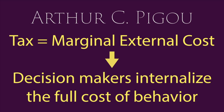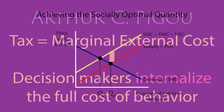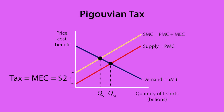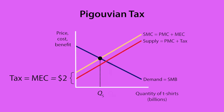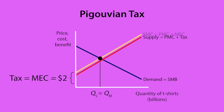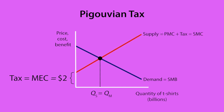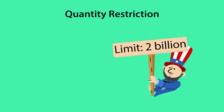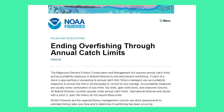Arthur Pigou pointed out that a tax equal to the marginal external cost would cause decision makers to internalize the full social marginal cost and bring the equilibrium quantity down to the socially optimal quantity. If a $2 Pigouvian tax were imposed on t-shirts, customers would pay for the burden imposed on others, and being responsible for the full cost to society, consumers would only buy those t-shirts whose benefit exceeded their cost. Another approach is for the government to restrict the quantity to the socially optimal quantity of 2 billion — similar limits are in place, for example, to avoid overfishing and overhunting.